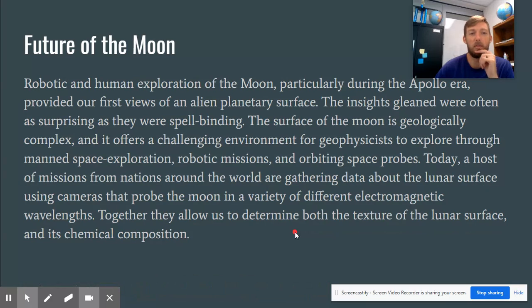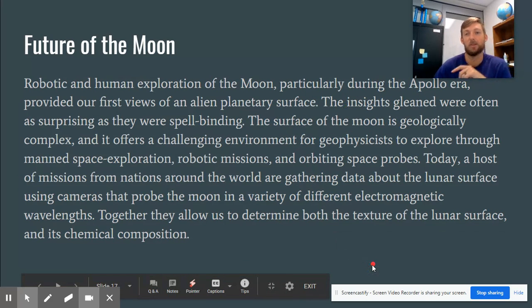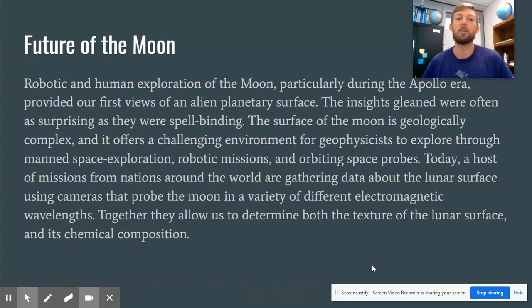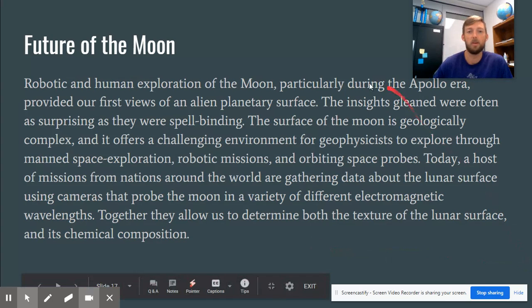Let's talk about the future of the moon. So robotic and human exploration of the moon, particularly during the Apollo era, provided our first views of an alien planetary surface. So the insights gleaned were often as surprising as they were spellbinding. The surface of the moon is geologically complex and offers a challenging environment for a geophysicist to explore through manned space exploration, robotic missions, and orbiting space probes. So today, the host of missions from nations around the world are gathering data about the lunar surfaces using cameras that probe the moon in a variety of different electromagnetic wavelengths. Together, they allow us to determine both the texture of the lunar surface and its chemical composition, which is pretty neat.